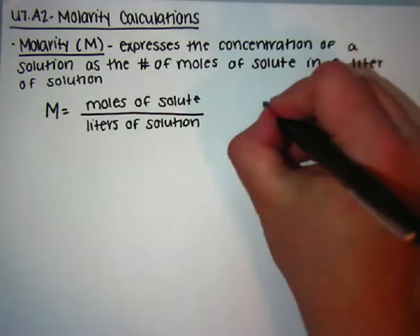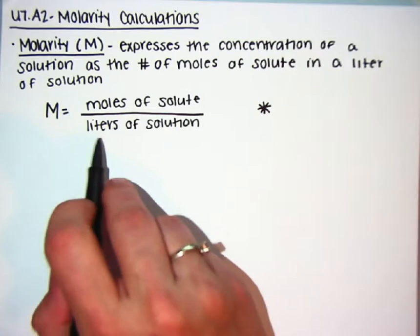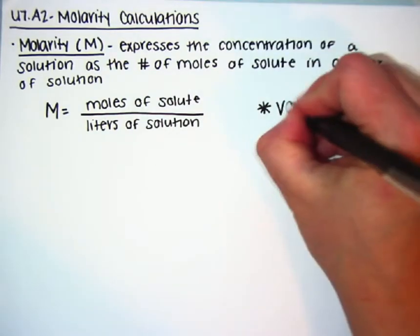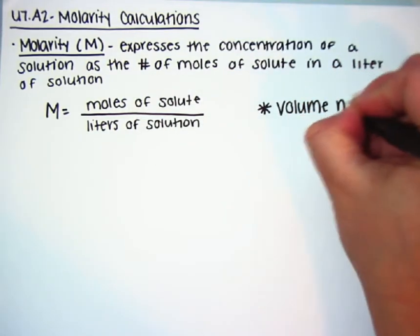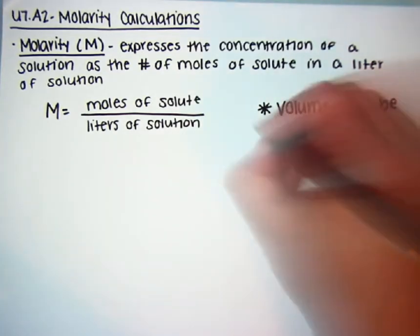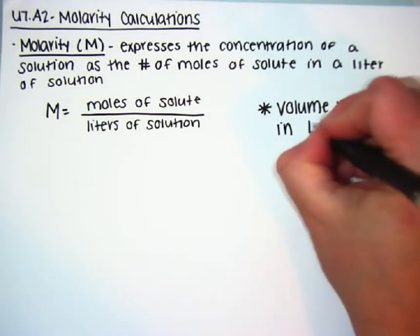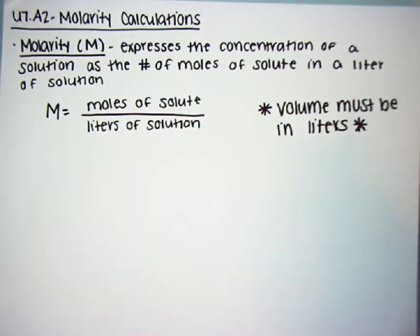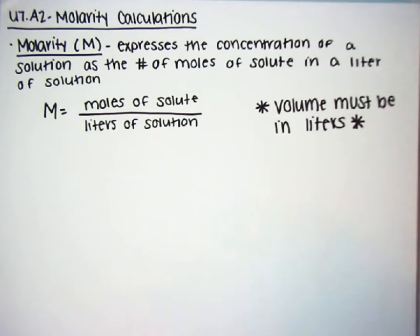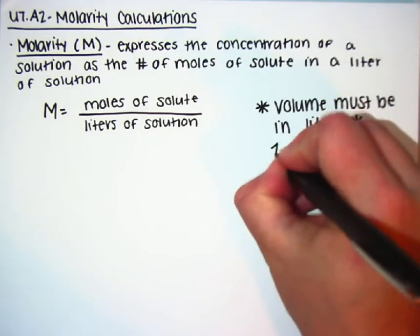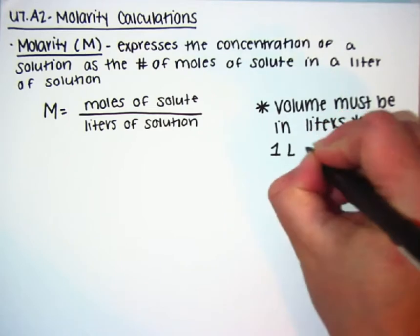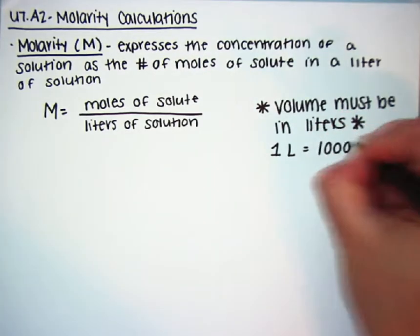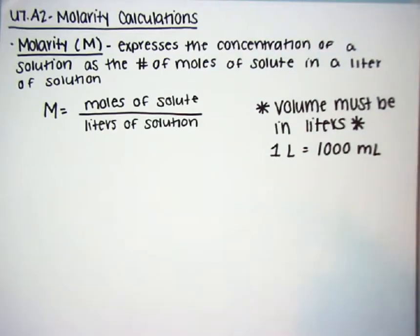One important thing to note is that word 'liters.' Volume must be in liters. A liter is pretty big, though. If we were in the lab, most of our measurements would be in milliliters, so you might have to do a conversion — one liter is equal to 1,000 milliliters.